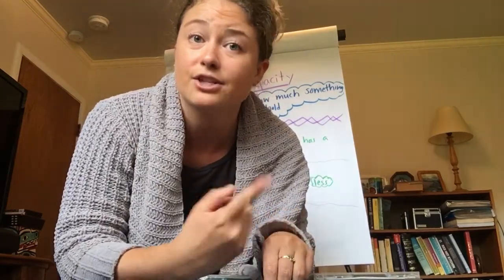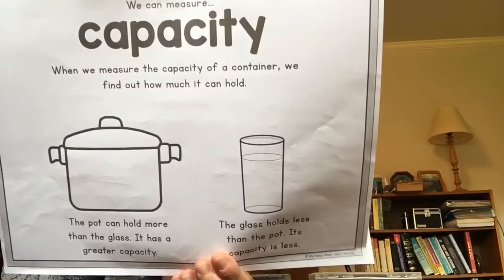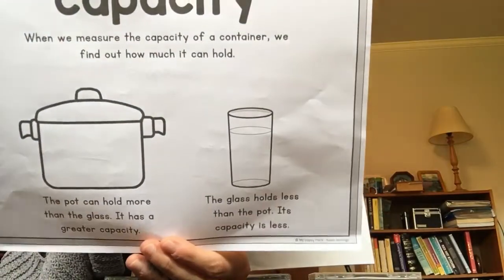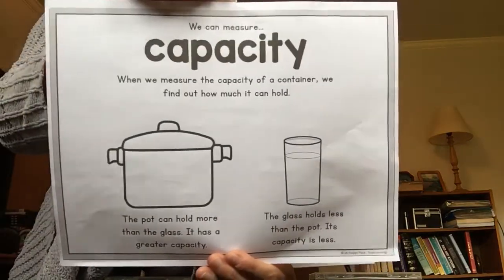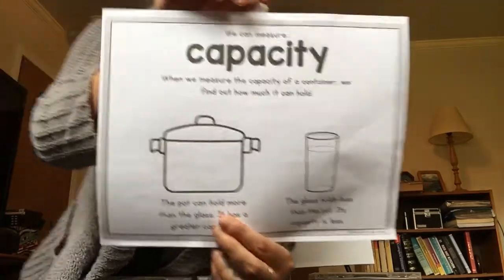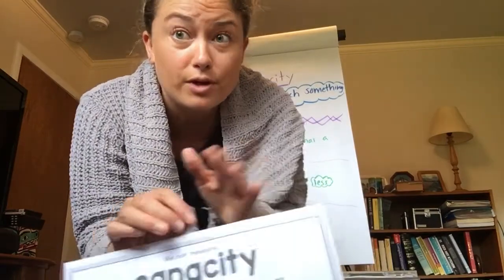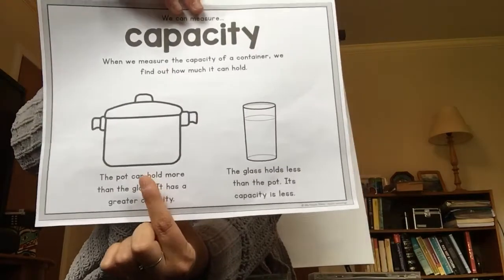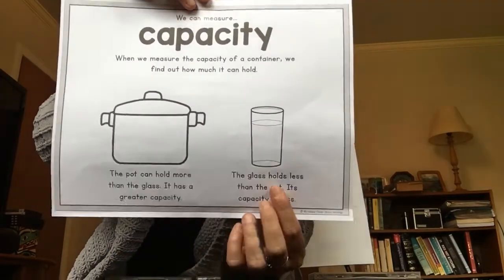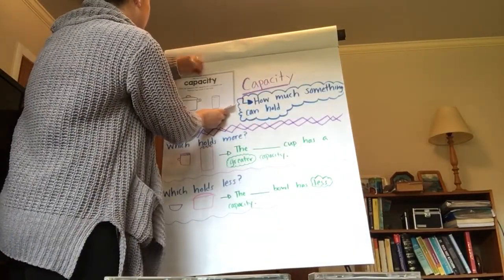My turn, your turn: capacity. Now, capacity — the capacity of a container, something that holds something else, is how much it can hold. So let's look at these two things: we have a pot and we have a glass. Which one do you think holds more? The pot, right! The pot holds more than the glass. That means, friends, it has a greater capacity. We know that greater means big, so the pot has a greater capacity than the glass. The glass holds less than the pot, so its capacity is less.